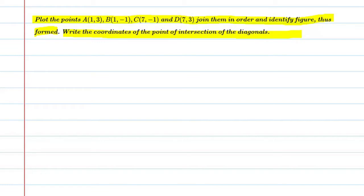So let's start this question. First of all, we will write the given points. The given points are A(1,3), second point is B(1,-1), third point is C(7,-1), and D last point that is (7,3).